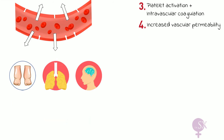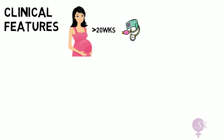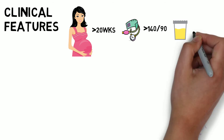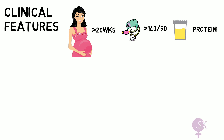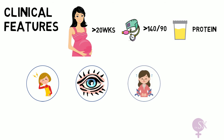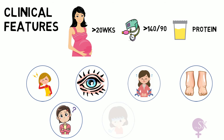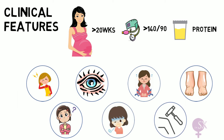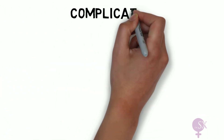Now that we understand the pathophysiology, we can consider the clinical findings. The patient is beyond 20 weeks gestation, has a blood pressure over 140/90, and proteinuria on dipstick testing. Patients with preeclampsia may be completely asymptomatic, or may present with headaches, visual disturbances, epigastric or right upper quadrant pain, swelling in the legs and face, confusion, nausea and vomiting. Hyperreflexia and clonus may be elicited on examination.